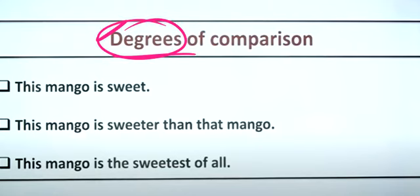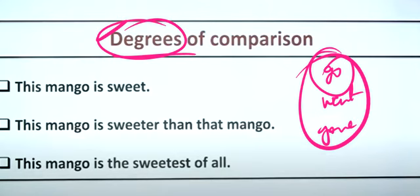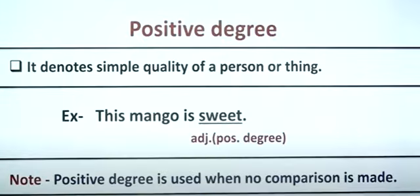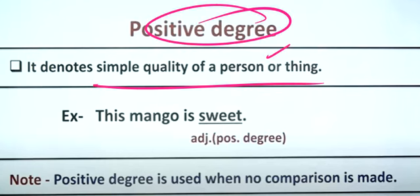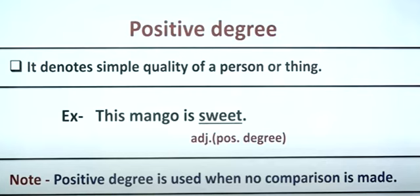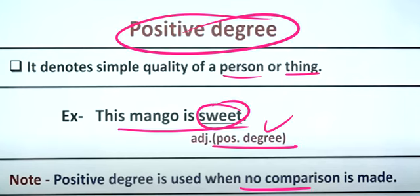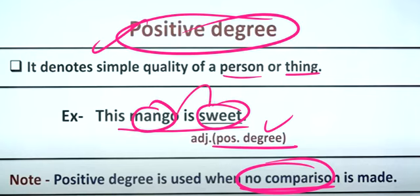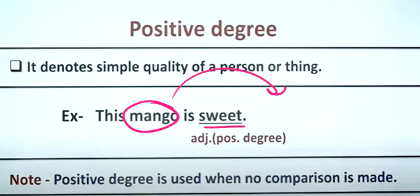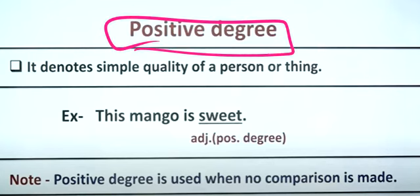Adjective degrees, like verb forms, have three types: positive, comparative, and superlative. The positive degree expresses a simple quality with no comparison — for example, 'this mango is sweet.' There is only one mango and no comparison, so we use the positive degree of the adjective.